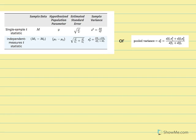The purpose of this video is to explain the new equations for chapter 10, the t-test for two independent samples. To do so, I'm going to compare the new equations to the equations we saw in chapter 9, which was a single sample t-test.